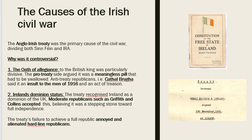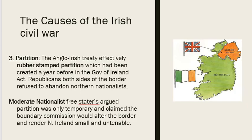Meanwhile, the hardline Republicans — guys who had fought in the 1916 Rising and the War of Independence and put their lives on the line for Ireland — did not like the idea of dominion status. They said no, we want a full republic, we fought for a full republic. They couldn't accept this as a stepping stone; they wanted a full republic and nothing else. So these were very divisive terms within the Anglo-Irish Treaty.